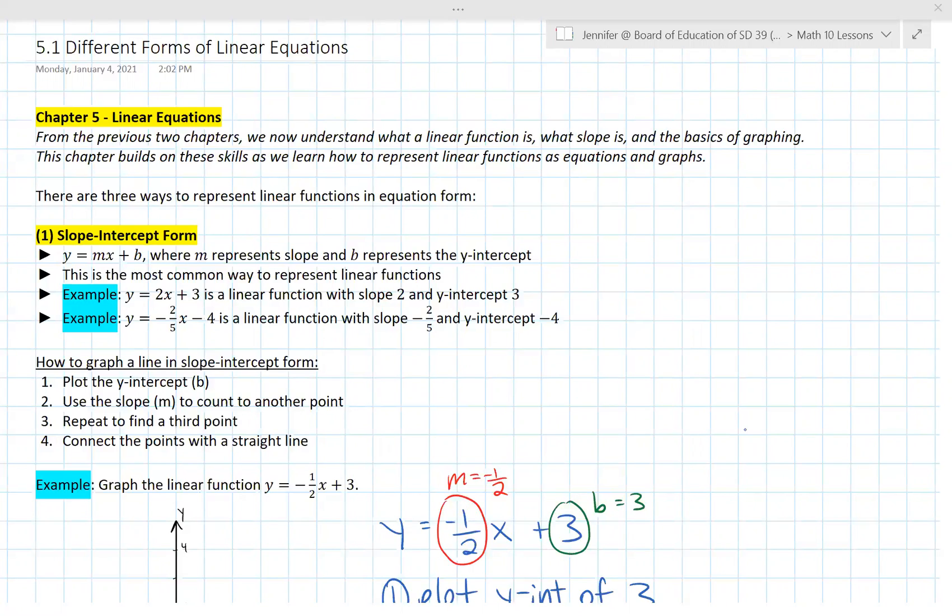So for example, y equals 2x plus 3. This is a linear function with a slope of 2 and a y-intercept of 3 because that's our m and our b values. Just looking at this equation you can tell right away what the slope and y-intercept are which makes it really easy to analyze the function and to graph it. You can also have fractions. So this example, this linear function has a slope of negative 2/5 and a y-intercept of negative 4.